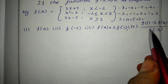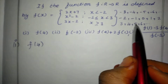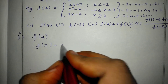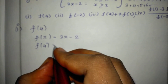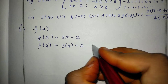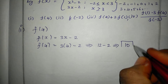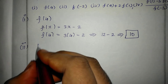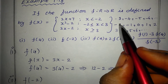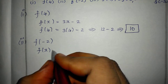First subdivision: f(4). Since 4 is greater than or equal to 3, we use f(x) = 3x minus 2. So f(4) is equal to 3 times 4 minus 2, which equals 10.